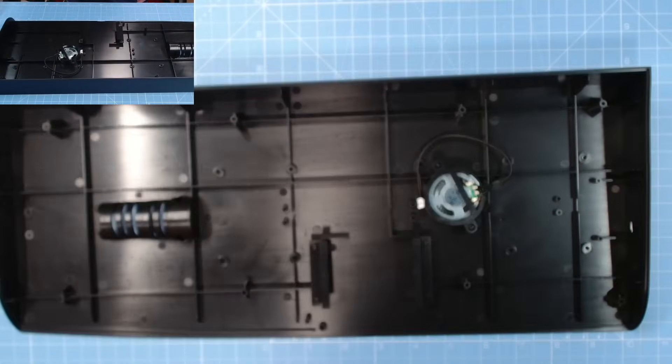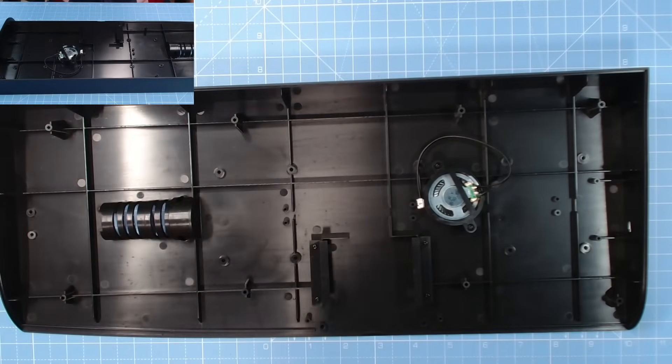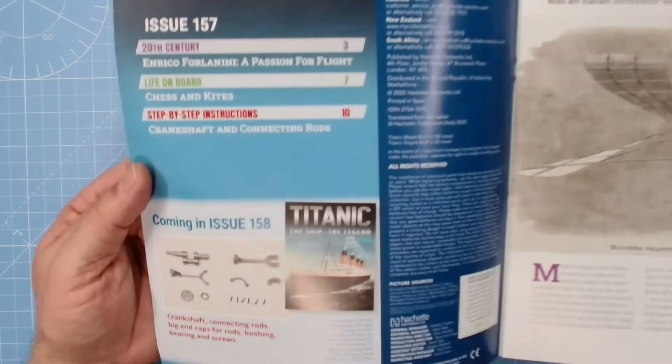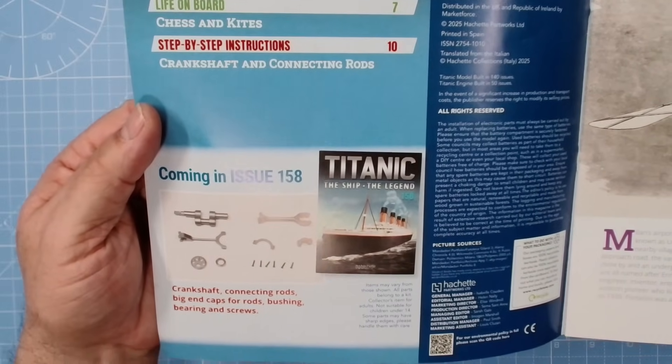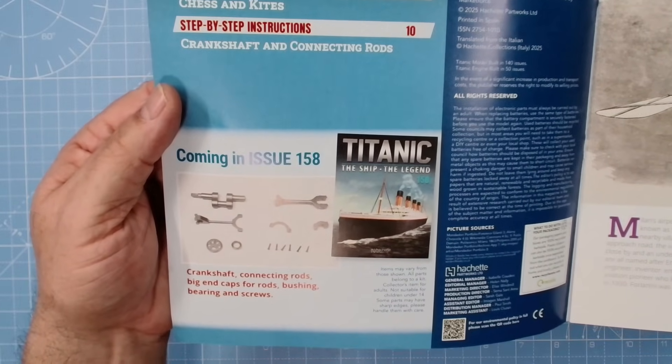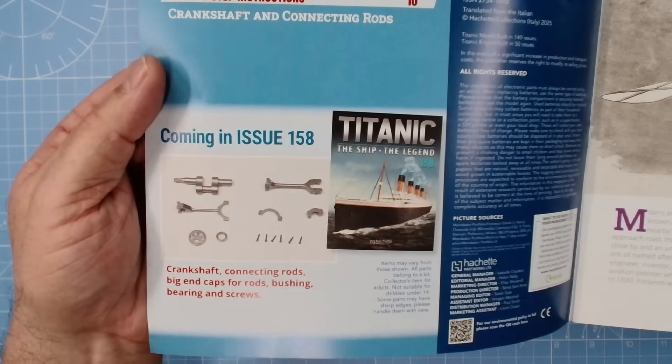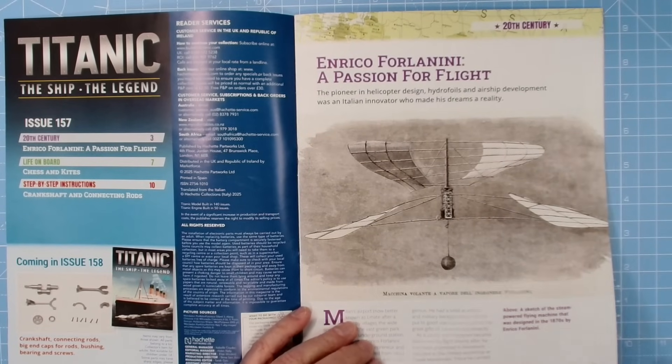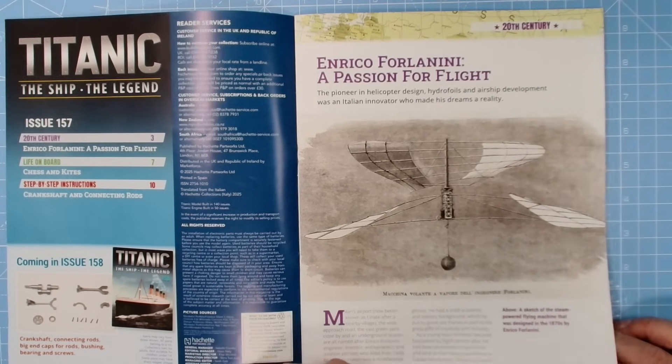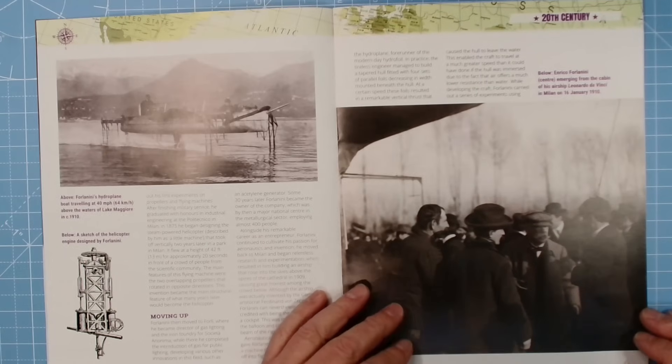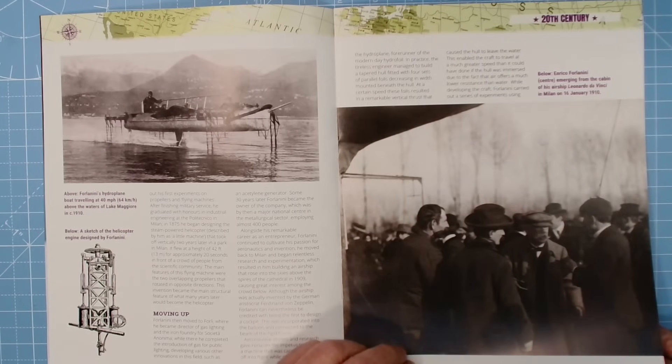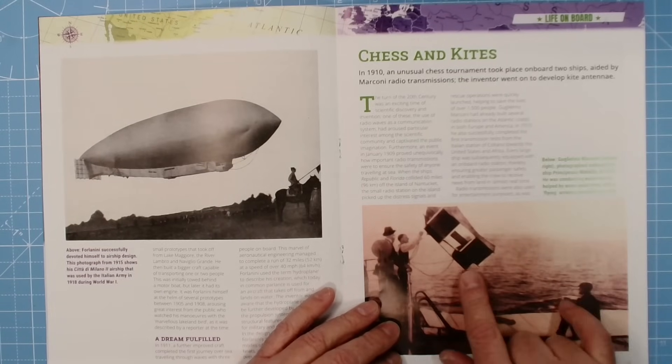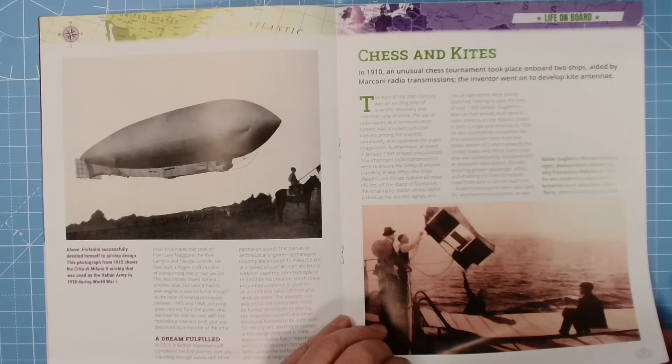That's it for stage 156, so let's move on to stage 157. Here we have stage 157 coming in issue 158, crankshaft, connecting rods, big end caps for rods, bushing, bearing and screws. And here we have Enrico Forlanini, a passion for flight. Some lovely old photographs here, oh there he is, oh again. It makes up before there, corner, there's his kite flying, his aerial, there we go.